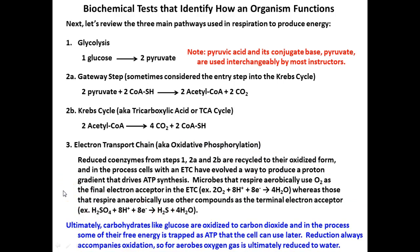Alternatively, carbohydrates — sugars, glucose — can be oxidized. They're broken down, taking electrons, and the carbon is given off as carbon dioxide. Some of the free energy is trapped in ATP that can be used later. Reduction always accompanies oxidation — so you have that loss of electrons from glucose, and later those electrons are added to oxygen to form water. Those electrons have to go somewhere.